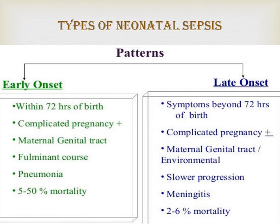Early onset sepsis occurs within the first 72 hours of birth and is most often transmitted from the mother through the maternal genital tract. Most of the time, early onset sepsis is associated with a fulminant course, and pneumonia is the most common presentation. Five to fifty percent of sepsis-associated mortality in the newborn period is due to early onset sepsis. Late onset sepsis occurs beyond 72 hours of birth and is usually acquired from the environment, though late onset GBS infection can manifest up to 60 days. Late onset sepsis is associated with slower progression, and meningitis is more common. Mortality from late onset sepsis is 2 to 6%.